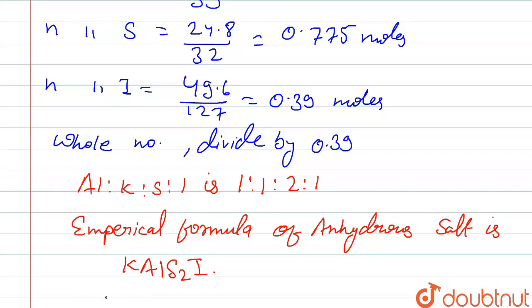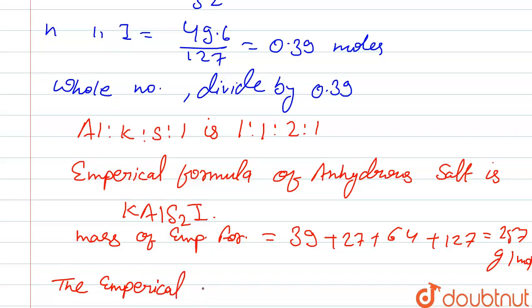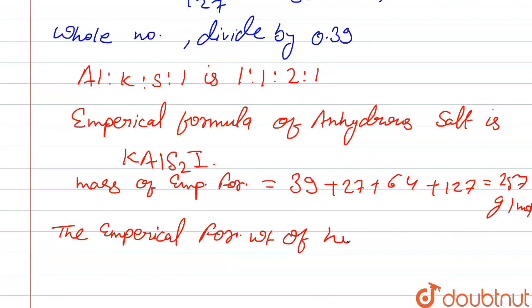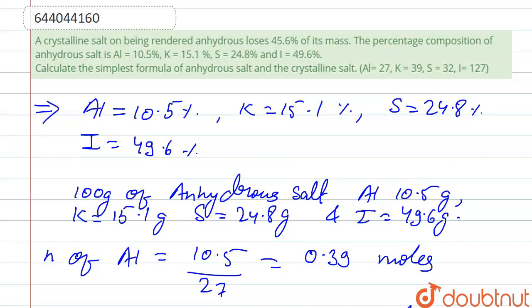The empirical formula mass equals 39 (K) plus 27 (Al) plus 64 (S₂) plus 127 (I), which equals 257 grams per mole. The empirical formula weight of the hydrated salt is calculated as: 100 divided by (100 minus 45.6) multiplied by 257, which equals 472 grams per mole. Here 45.6 is the loss on rendering anhydrous.